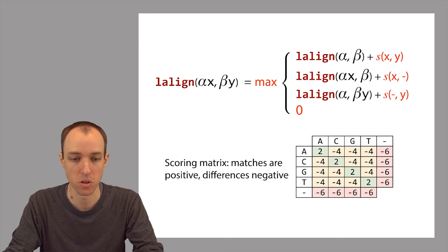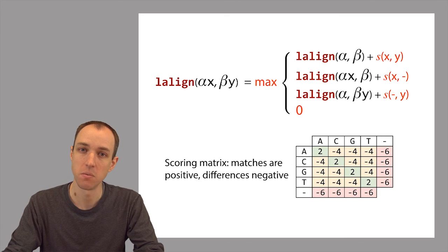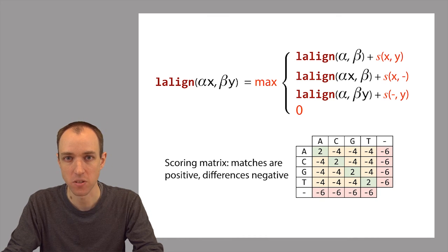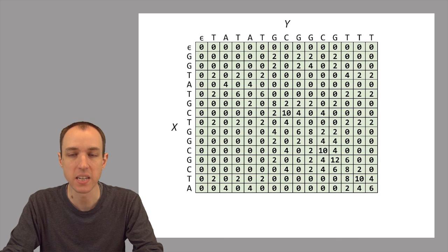So here's the recurrence for a local alignment. The differences between this recurrence and the recurrence we use for global alignment are highlighted here in red. And instead of using a penalty matrix, we're going to use something similar which we'll call a scoring matrix. An important difference between the scoring matrix and the penalty matrix is that in the scoring matrix, we're going to give a positive bonus for a match, and then we're going to give a negative penalty to all the different kinds of differences. So in this case, substitutions are going to have a penalty of negative four and gaps have a penalty of negative six.